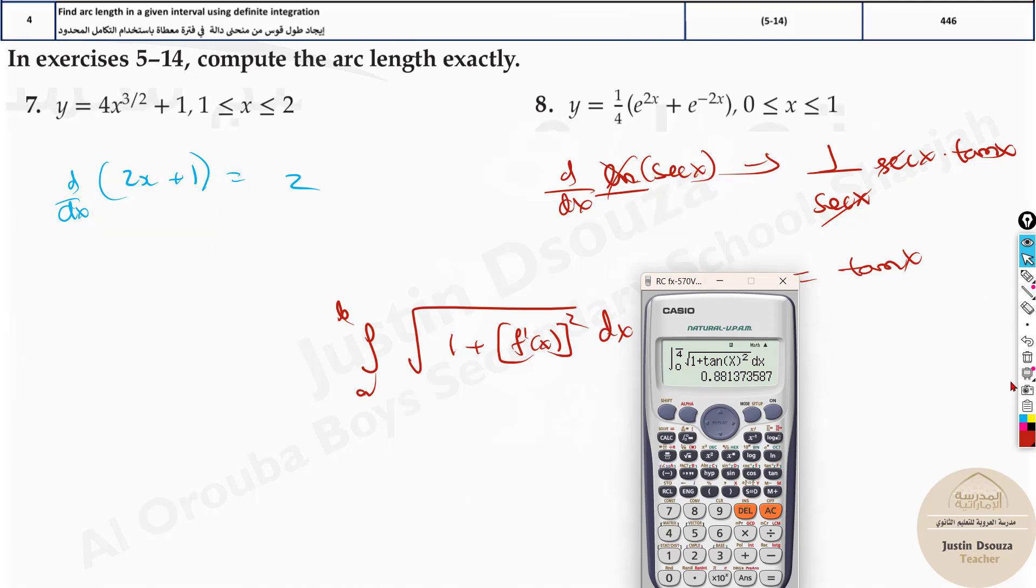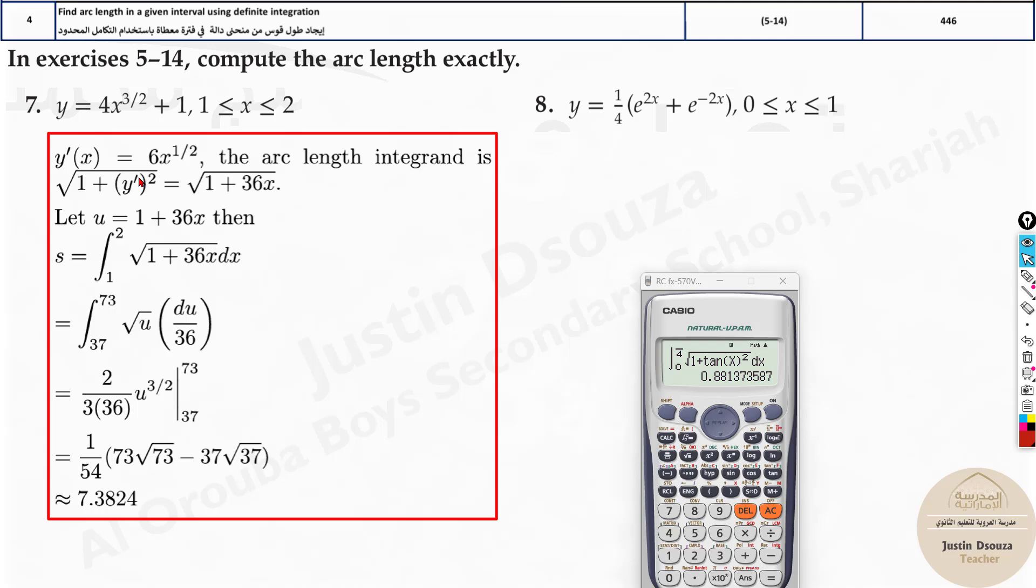Same way you can do all these problems. Here please be careful, the derivation is very important. Now over here they have done u substitution and everything. That's not required. A simple derivation is enough. This is just power rule. When you derive it, let's write the question first. 3 by 2 plus 1, differentiation of this will be this comes down.